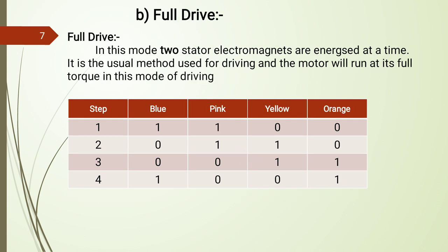In full drive method, two stator electromagnets are energized at the same time. For step one, blue and pink are activated; step two, pink and yellow; step three, yellow and orange; step four, orange and blue. This cycle repeats with two windings activated successively, generating more torque compared to wave drive.